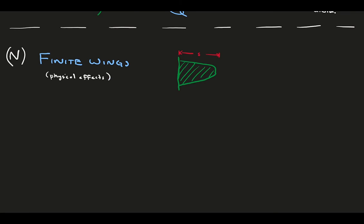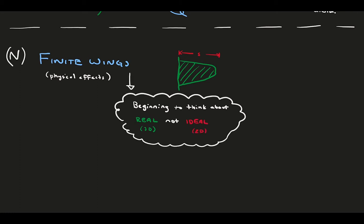Here, we introduce the physical effects that come with a finite span wing, and we begin thinking about the impacts of three-dimensional reality in addition to the two-dimensional ideal case.